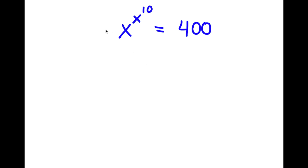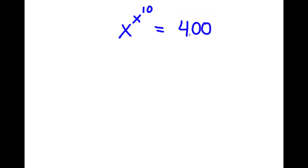In this problem, I have x to the power of x to the power of 10 is equal to 400. To start, I'm going to rewrite 400 as 20 squared.